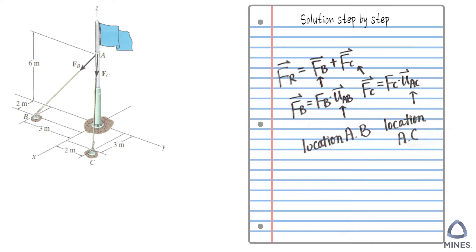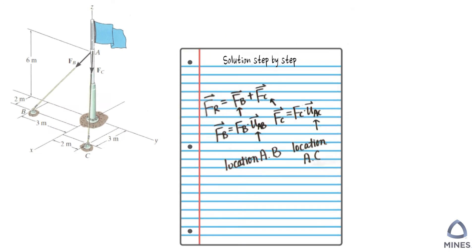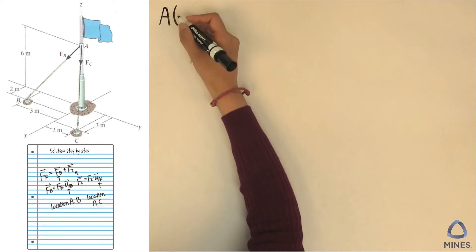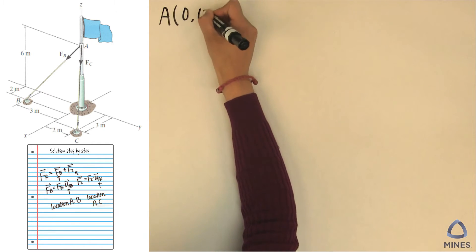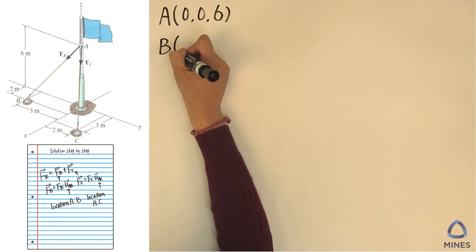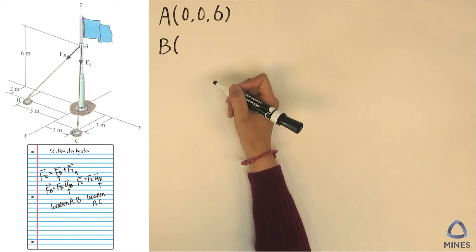From the picture, we can see A in this coordinate system will be (0, 0, 6). B location will be - notice that the x will be from here to here, that's positive 2.